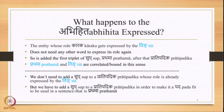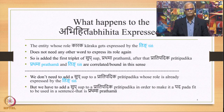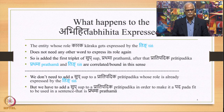First, let us deal with the question: what happens to the Abhihita Karaka — the Karaka that is expressed? We have seen that there are three types of constructions possible in Sanskrit: Kartruvachya, Karmavachya, and Bhavavachya. In Kartruvachya, the Ting expresses Kartha and the remaining Karakas remain unexpressed. In order to express these unexpressed Karakas, we use Supras, and we list the Sub-triplets to express a particular Karaka.